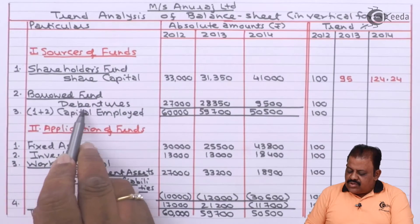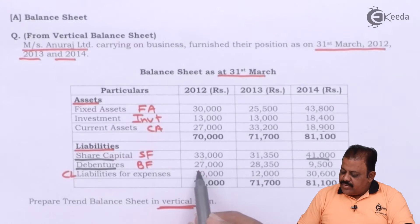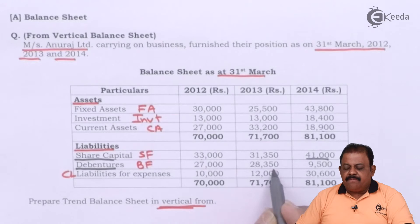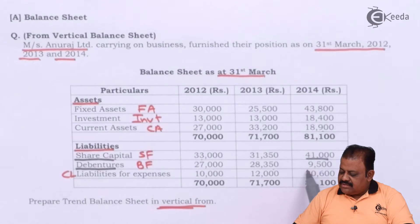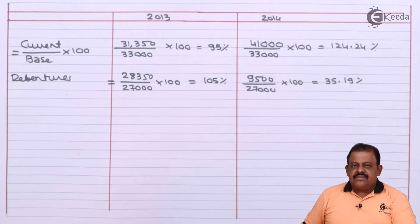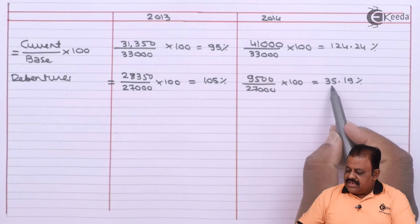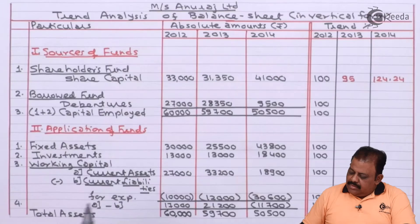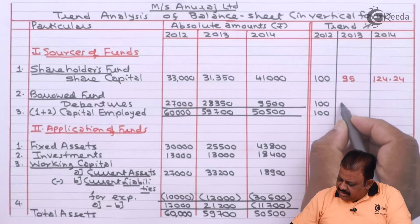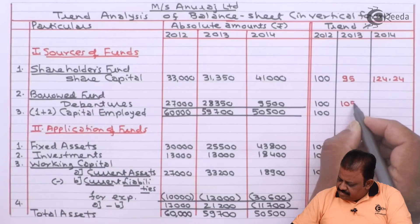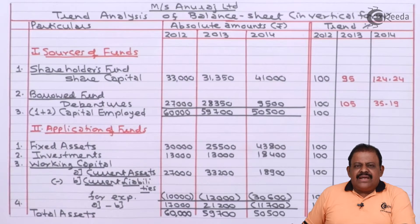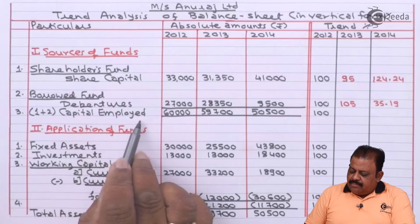Now for debentures: base year is 27,000, 2013 absolute is 28,350, and 2014 is 9,500. The trend for 2013 is 105 percent and for 2014 it is 35.19 percent. So: base = 100, 2013 = 105, 2014 = 35.19 percent. Similarly, we calculate for capital employed: base 60,000, 2013 is 59,700 giving 99.5 percent, and 2014 is 50,500 giving 84.17 percent.